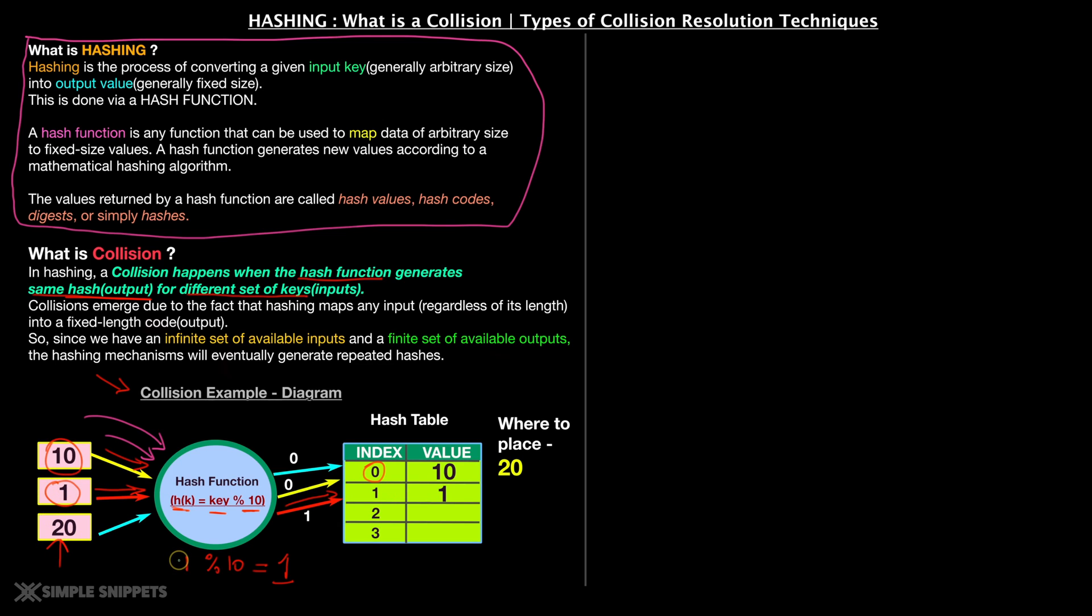Now for the last key 20, again you say 20 mod 10, and since 20 is completely divisible by 10, again you're going to get 0. So if you follow the blue arrow, you can see one more time we are getting the same index, but you can see already we have stored 10 as the key. So where to place 20? So this is the real question when a collision happens. This is an example of collision happening.